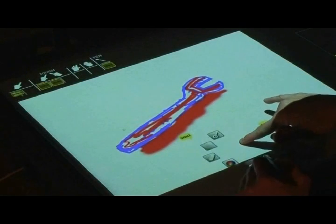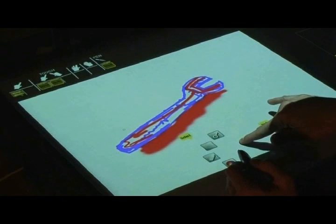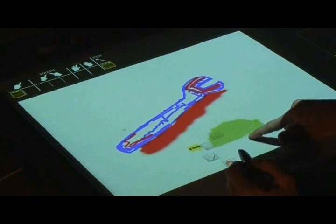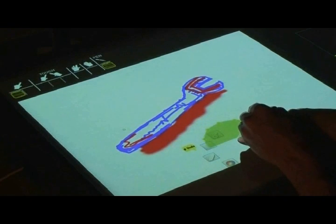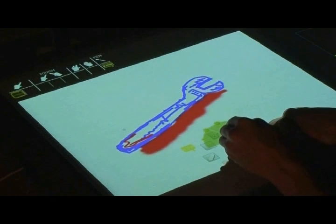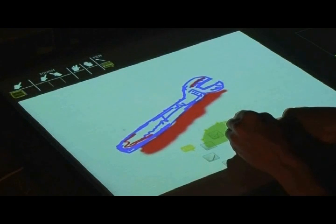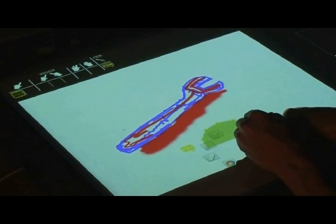Tapping on the back side of the menu performs one step of undo. An undo menu shortly appears to inform about that action. Holding that two-finger posture keeps the undo menu visible. Now the pen can be used to specify the number of undo steps.